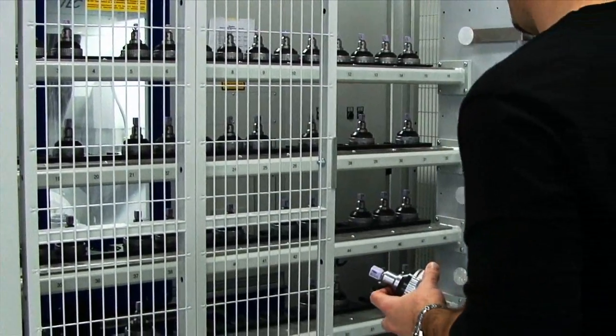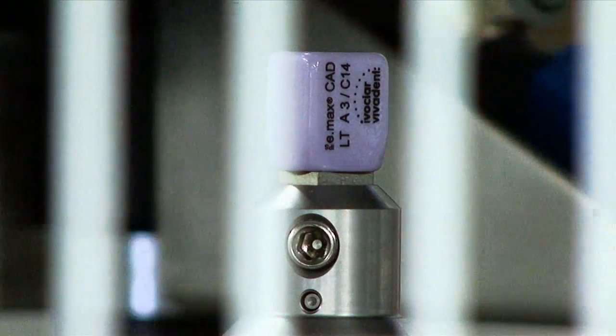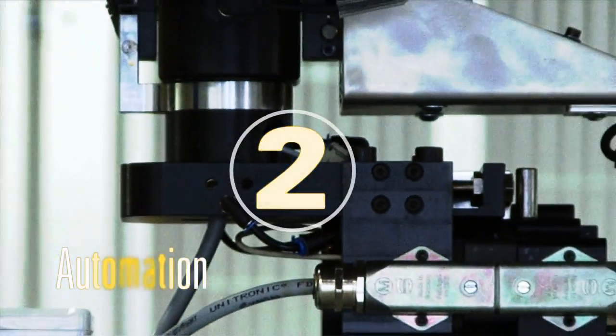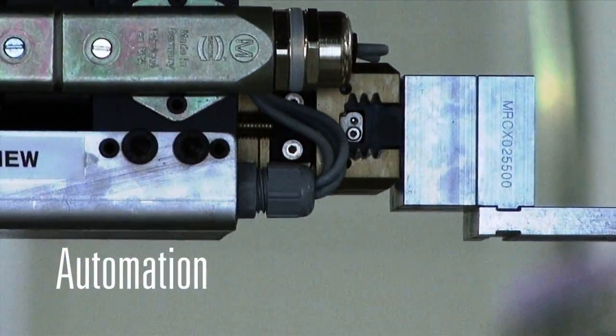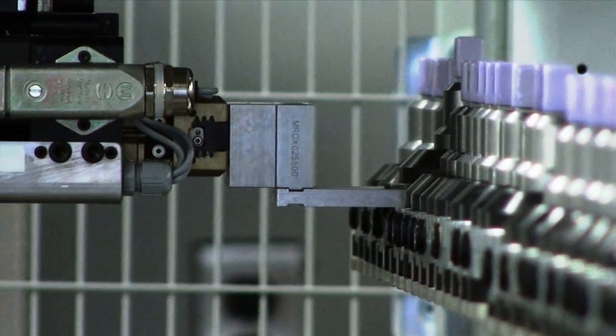The coated mounts are loaded onto the automation rack. The robotic arm takes the mount and transfers it into one of the industrial milling chambers.